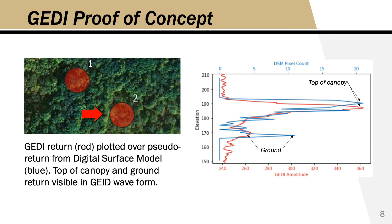This is the same proof of concept for a second footprint. The pseudo return is again created from a DSM, and when compared to GEDI, we see that GEDI also shows the ground and the top of canopy. There is a slight difference between the top of canopy in GEDI and the pseudo return, accounted for by the time of year the data was collected — the pseudo return data was collected in summer when leaves were full, while the GEDI pass occurred later in the year after many leaves had fallen. This proof of concept shows the expected bimodal pattern, so the question remains: will we see a similar pattern over crop fields?